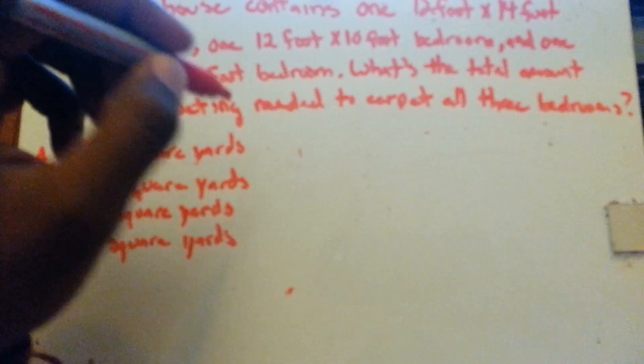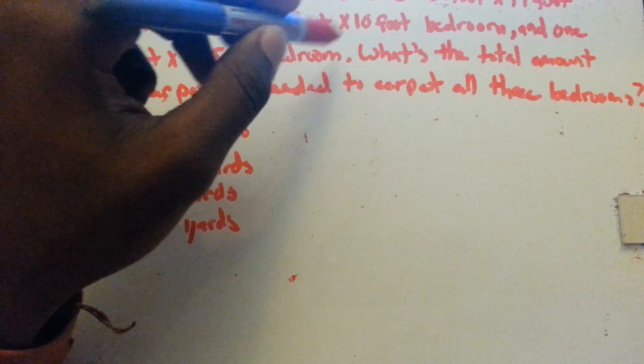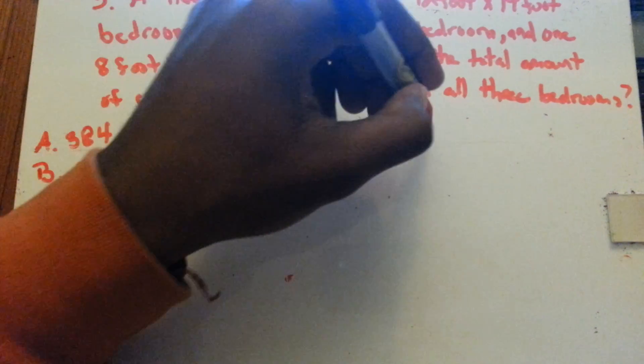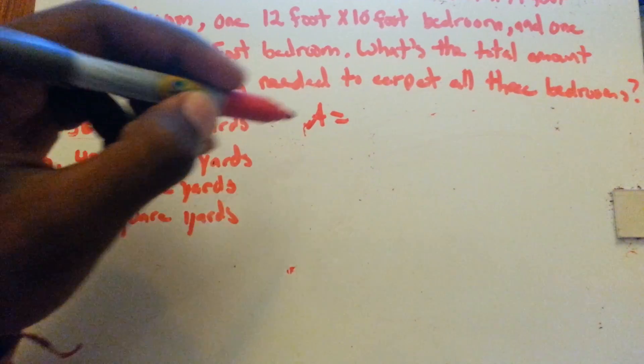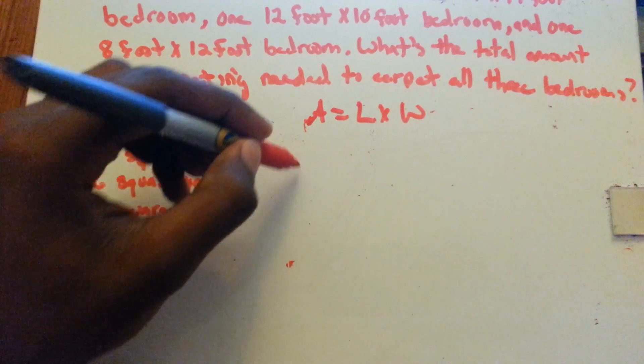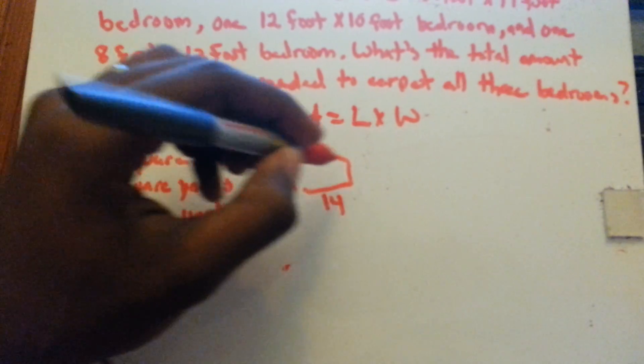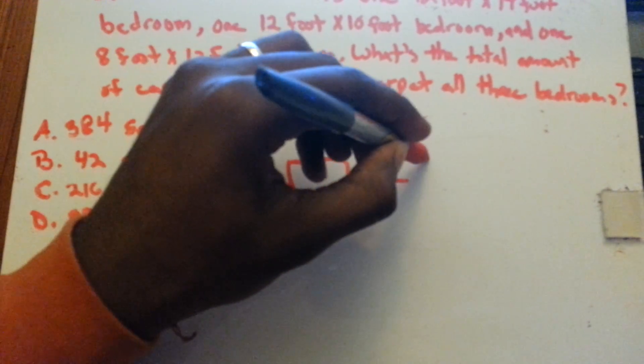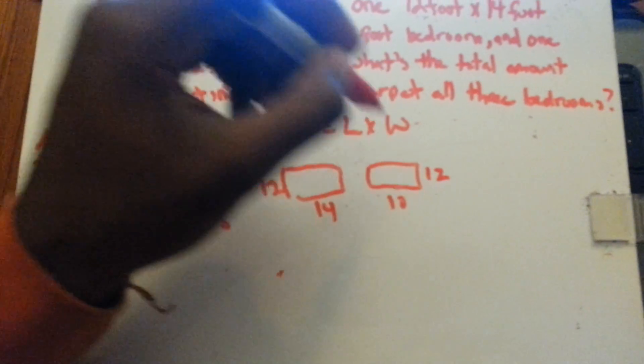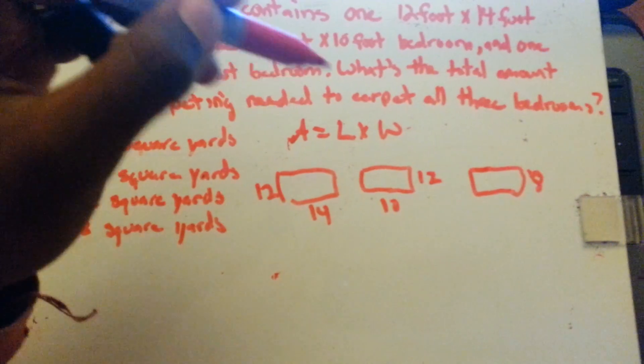To find the area, we have rectangular rooms. That's what this 12 foot by 10 foot means. So the area for a rectangle is length times width, so one side times the other side. One room is 12 by 14, the other room is 12 by 10, and the other room is 8 by 12.